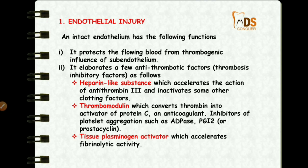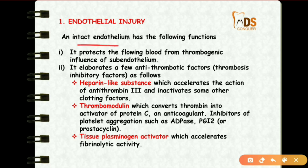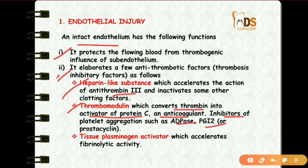The first predisposing factor is endothelial injury. Intact endothelium has many functions and protects flowing blood from thrombus formation. It has antithrombotic factors that inhibit thrombosis, such as heparin-like substances which accelerate antithrombin 3, and thrombomodulin which converts thrombin into an activator of protein C — an anticoagulant.